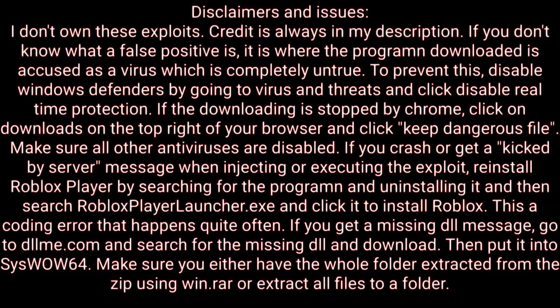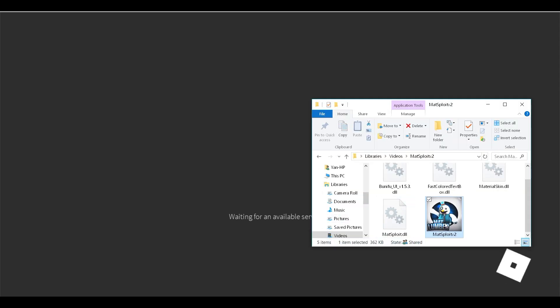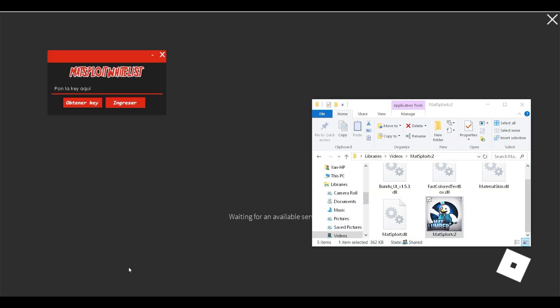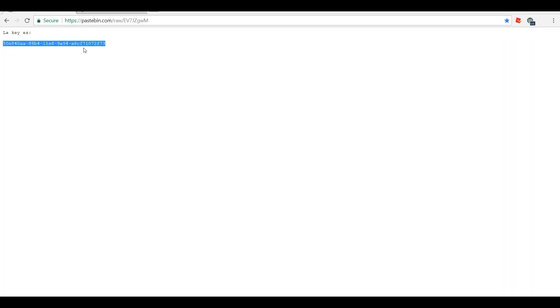If you get a missing DLL message, go to lme.com and search for the missing DLL and download it, then put it into System32 or SysWOW64. Make sure you either have the whole folder extracted from the zip using WinRAR, or extract all files to a folder.